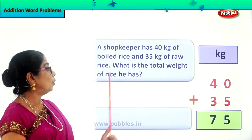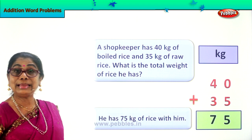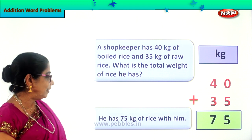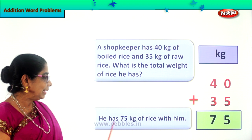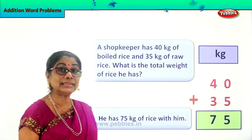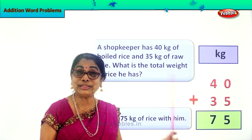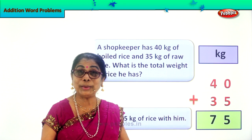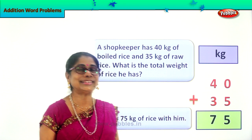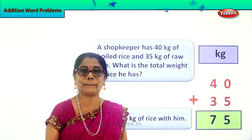So what is the total weight of rice the shopkeeper has in his shop? 75 kg. He has 75 kg of rice with him in the shop. Did you enjoy addition word problems? Let's look at another new problem.